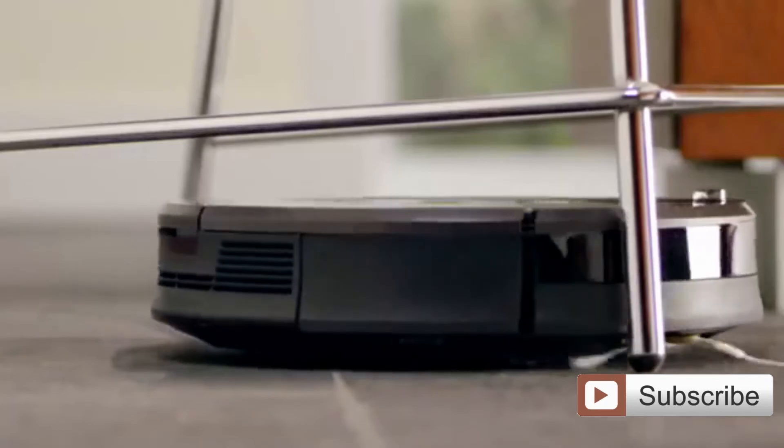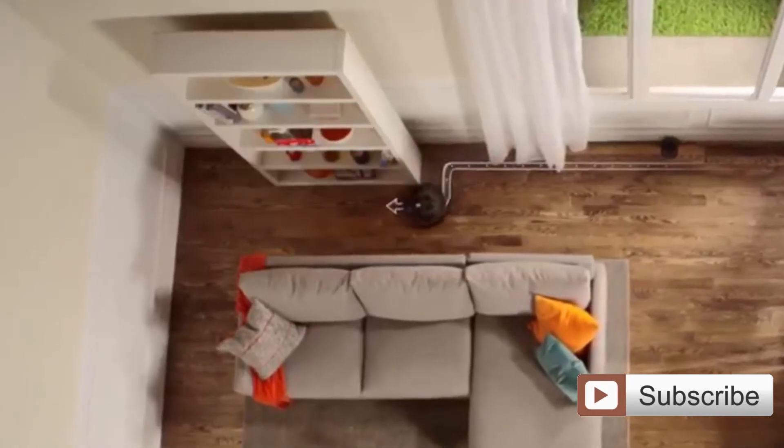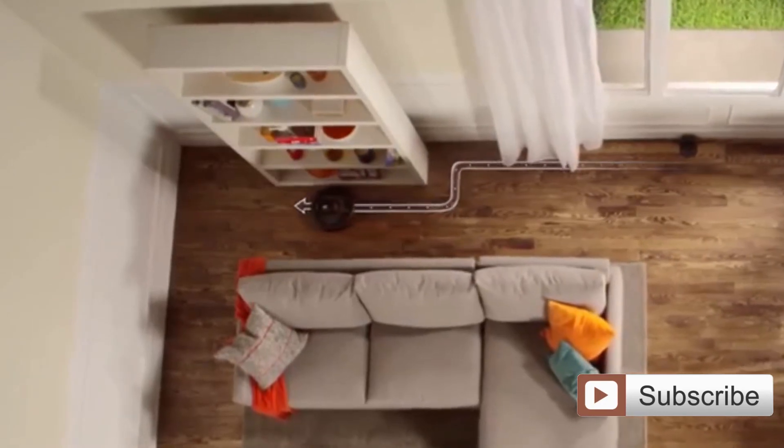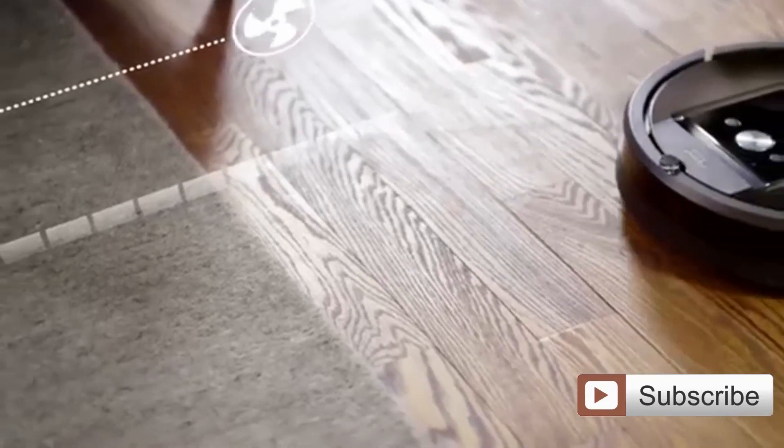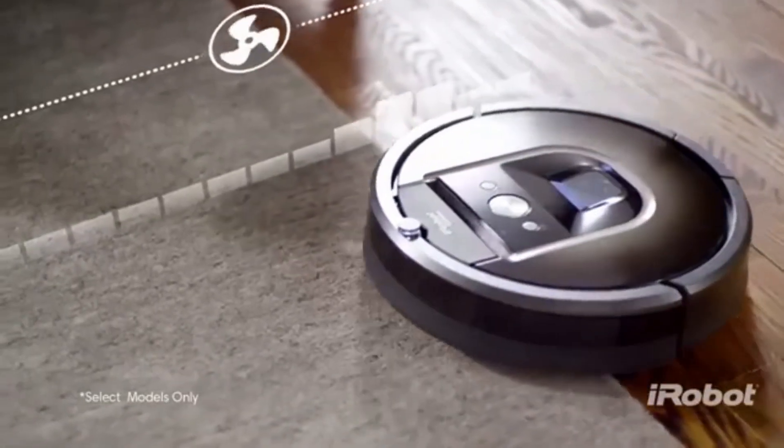Okay, so all we have done with the Alexa app is enabled voice commands. So now you will be able to speak to your Alexa device to control different functions of your Roomba.